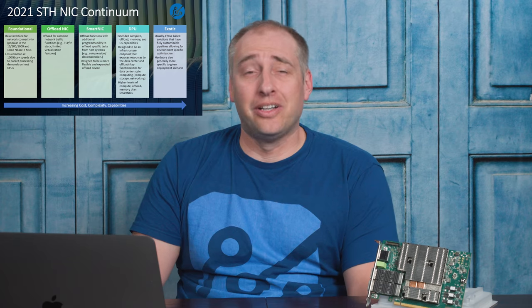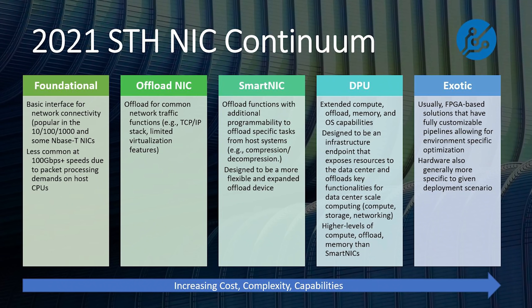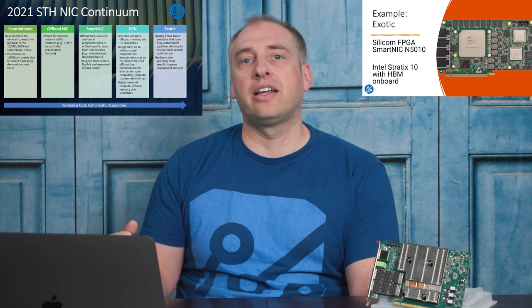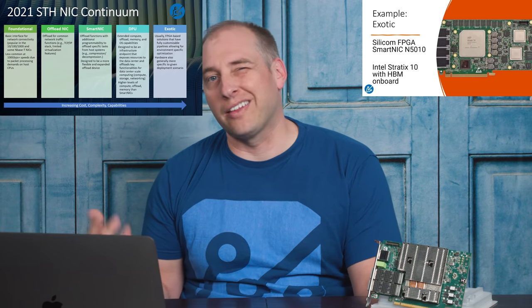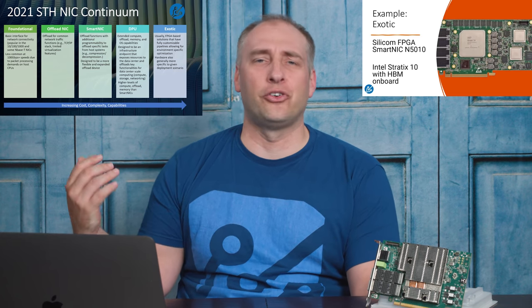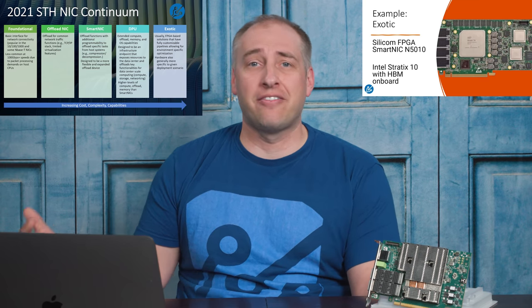Now let's get to exotic — which is super fun. Typically the exotic NICs of today are FPGA-based, because FPGAs give you the ability to have really high-speed IO for high-speed networking on one side, but also to create completely custom processing pipelines that you can change. There are things like Microsoft Project Brainwave, where Microsoft actually implements their own network stack and adds things like inferencing that can even change based on time of day.